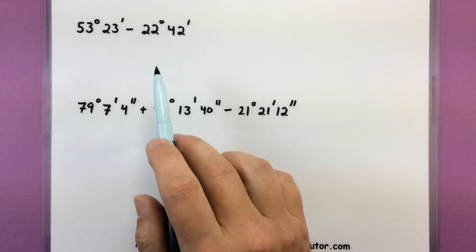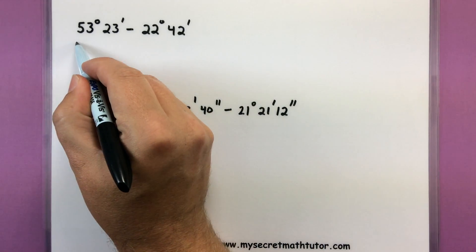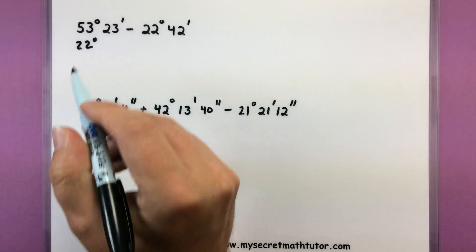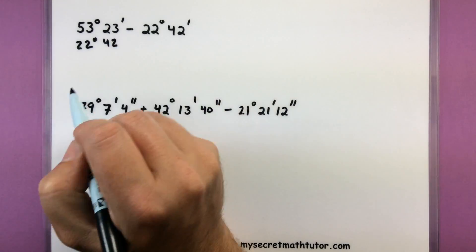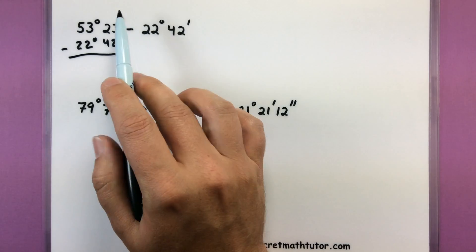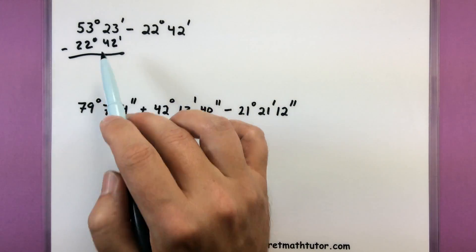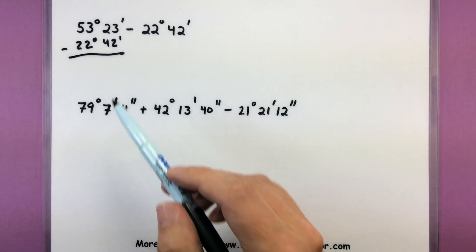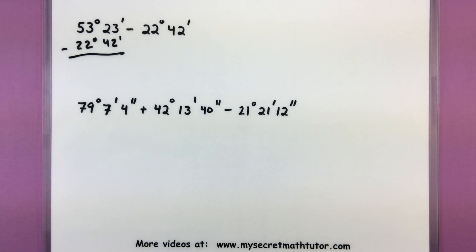Like before, it's probably a good idea to write them right under another. That way you can easily see what you got. So we'll be taking 53 degrees, 23 minutes, subtracting 22 degrees, 42 minutes. Now as I go to subtract away my 42 minutes, I don't have enough. I only have 23 minutes. So we need to borrow a degree to make that number bigger.